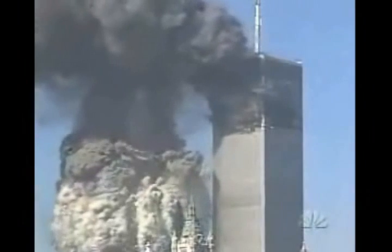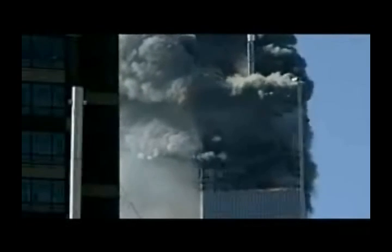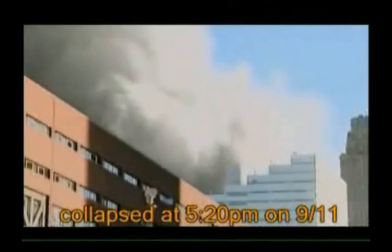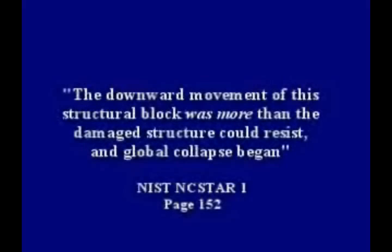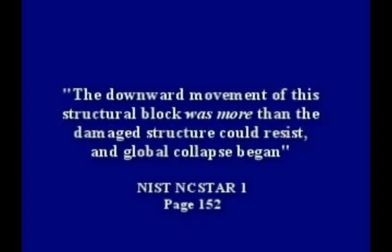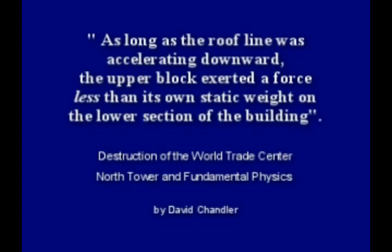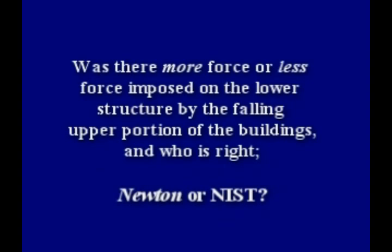The three largest structural failures in history all happened on 9-11. The National Institute of Standards and Technology, or NIST, was tasked with providing a report as to the cause of their destruction, and they concluded that the primary cause was from normal office fires. In their final tower report, NIST wrote: 'The downward movement of the structural block was more than the damaged structure could resist, and the global collapse began.' But in 2010, David Chandler wrote a paper called 'Destruction of the World Trade Center North Tower and Fundamental Physics.' Citing Newton's laws, he concluded: as long as the roof line was accelerating downward, the upper block exerted a force less than its own static weight on the lower section of the building. So was there more force or less force imposed on the lower structure by the falling upper portion of the buildings? And who is right?